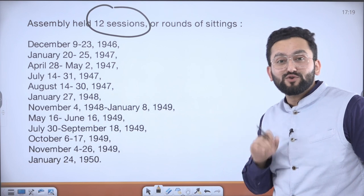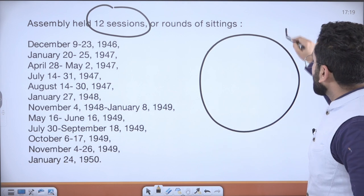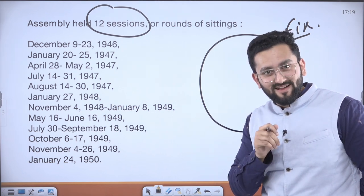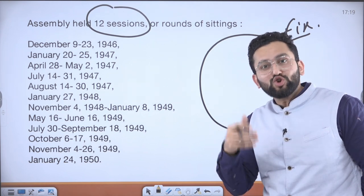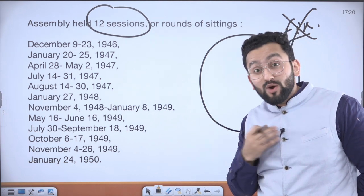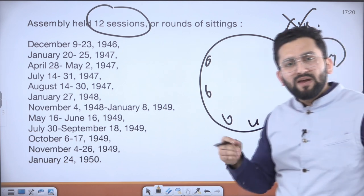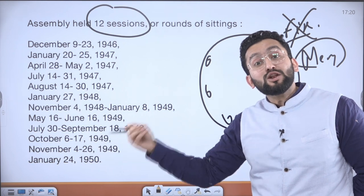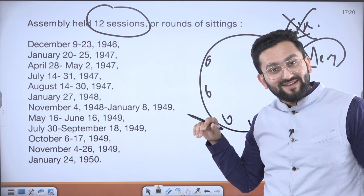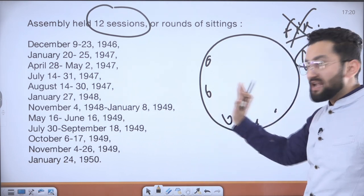There are many surprising facts about the Constituent Assembly. When you think of it, you might imagine a fixed body with fixed members — but there was no fixed membership at any particular point of time. The allocation of seats was fixed, but membership kept changing: many people resigned, some passed away, and some from princely states were not nominated initially because their states refused to join. Later, some princely states started sending their representatives. So at one particular time, you cannot say there was a fixed membership.